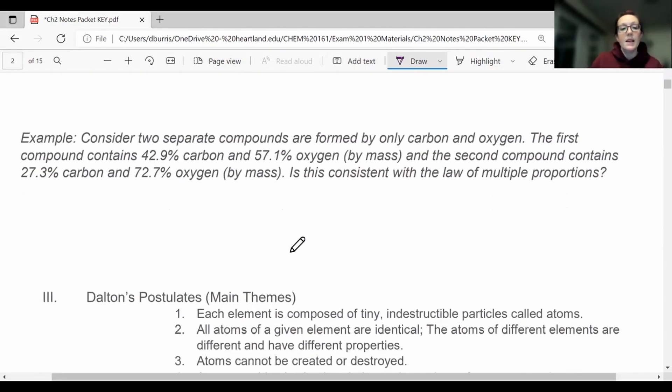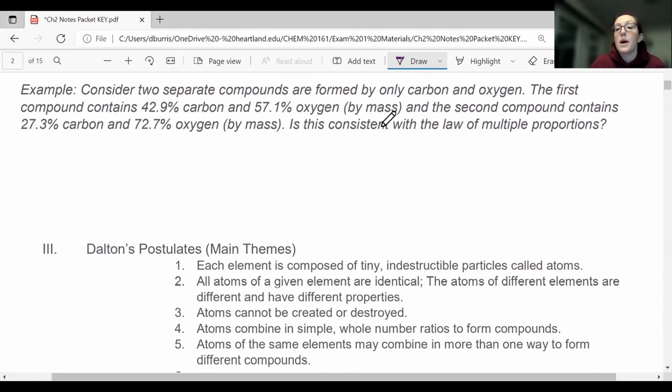All right, so here's an example, okay? It says consider two separate compounds that are formed by only carbon and oxygen. Okay, so carbon and oxygen can make multiple compounds. We know we can have CO2. You can also have CO, carbon monoxide. It says the first compound has 42.9% carbon and 57.1% oxygen by mass, and the second has 27.3% carbon and 72.7% oxygen by mass. Okay, so different percentages, both carbon and oxygen. Is this consistent with the law of multiple proportions? So to test that, what we need to do is we need to find the ratio of carbon to oxygen or oxygen to carbon for each of the compounds. So I'm going to look at the first one,